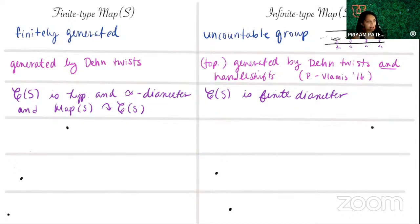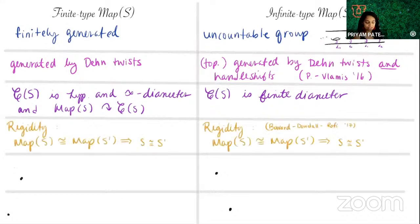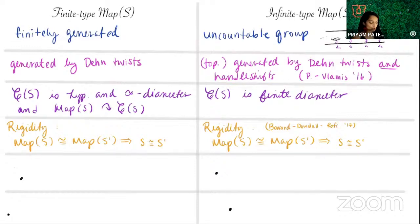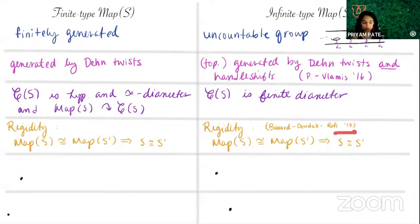One similarity I'll point out is rigidity — on both sides. This means that if the mapping class groups of S and S-prime are isomorphic, then S and S-prime are homeomorphic: you can't have two different surfaces with the same mapping class group. On the infinite type side this was proved by Bavard, Dowdall, and Rafi in 2017. These are really, really recent results.